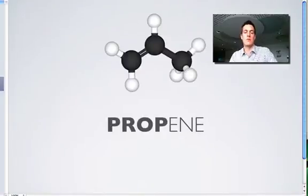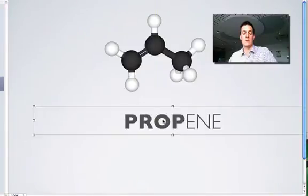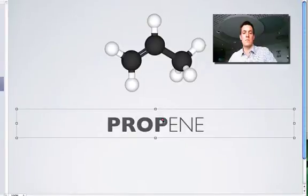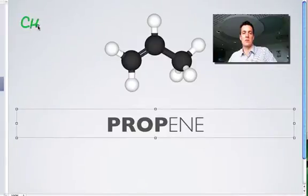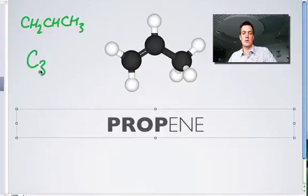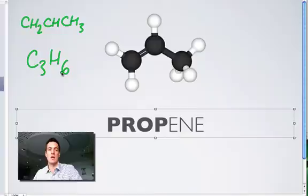Moving on to three carbons. Here we have propene with one, two, three carbons and a double bond to make it an alkene. Let's draw the formula in a couple of different ways. CH2 is the first carbon. The next carbon can only hold one hydrogen because it's made two bonds in the double bond and one to the next carbon, so that's CH, and then finally CH3. Grouping everything together, we have CH2CHCH3, or C3H6, which again follows the CnH2n formula.